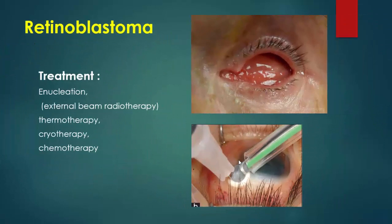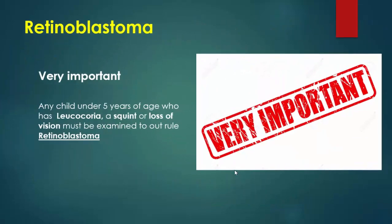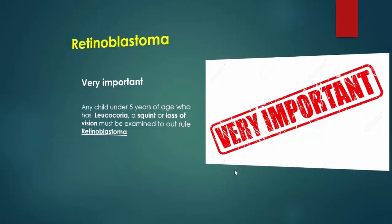Treatment of retinoblastoma includes enucleation or external beam radiotherapy, thermotherapy, cryotherapy, and chemotherapy. Very importantly, any child under five years of age who presents with leukocoria, squint, or loss of vision must be examined thoroughly to rule out retinoblastoma.